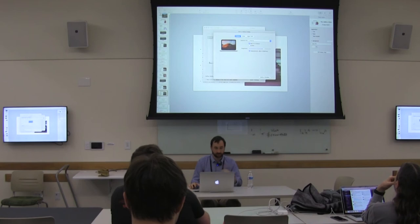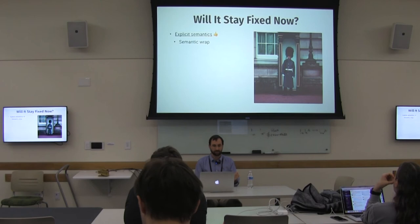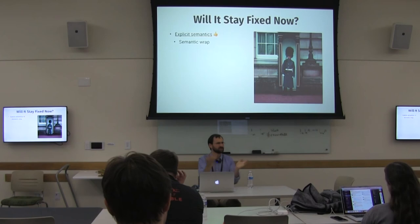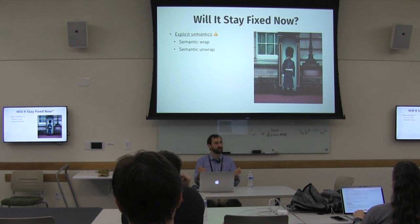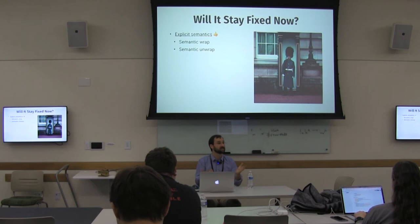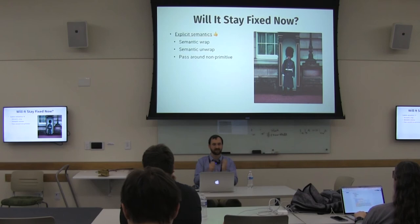Now, are we done? Is the legal team happy? Will it stay fixed? Let's look at what we've accomplished. We've got explicit semantics — at the point of entry when wrapping, we can see what this thing represents. We can see the explicit semantics when unwrapping: whether it's masked or unmasked. Perhaps before shipping to production we'll need to handle encrypting and decrypting it. Being explicit about these things makes it a lot easier to be confident we're doing them correctly. We're no longer passing around primitive types everywhere — we're passing around things with semantic meaning.